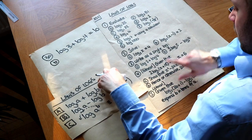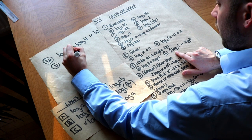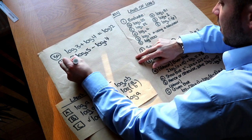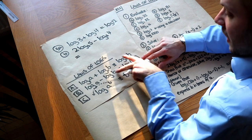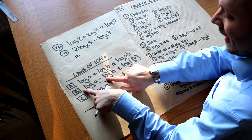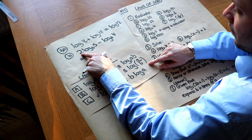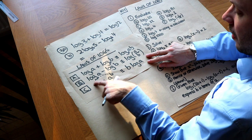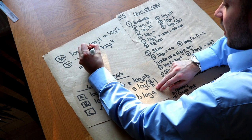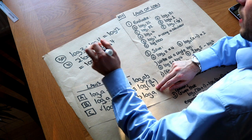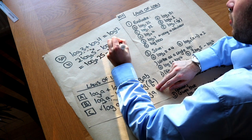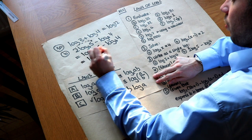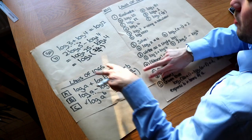Part b: 2·log base 3 of 5 − log base 3 of 4. To use the subtraction law there can't be a number in front of the logs. So use the third law to move the 2 to the power: log base 3 of 5² = log base 3 of 25. Now subtract: log base 3 of 25 − log base 3 of 4 = log base 3 of 25/4. That is the final single logarithm.